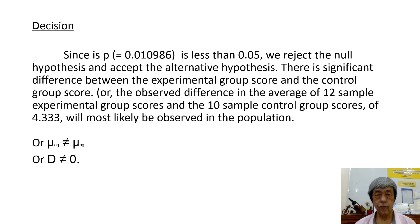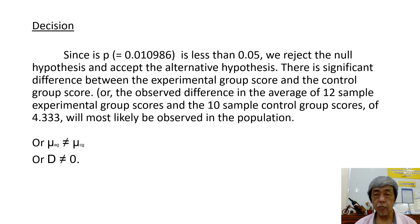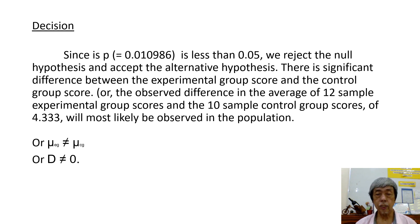Our decision will be: since P, which is 0.010986, is less than 0.05, we reject the null hypothesis and accept the alternative hypothesis. There is a significant difference between the experimental group score and the control group score. Or, the observed difference in the average of 12 sample experimental group scores and the 12 sample control group scores of 4.333 will most likely be observed in the population. Or, population means are not equal. Or, population difference is not equal to zero.